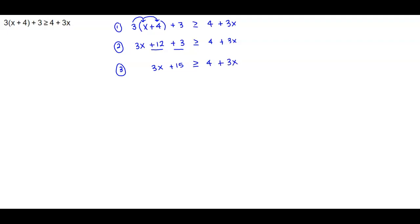Okay, and now we're going to solve for x. In order to do that, we need to subtract 3x from both sides of the inequality. Well, what happens? We see that this becomes 0 and that becomes 0. And we end up with 15, which is greater than or equal to 4.